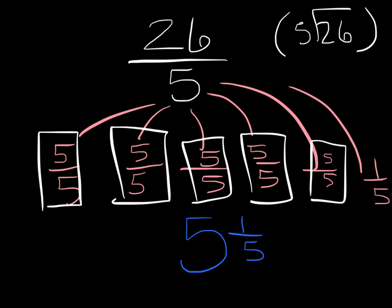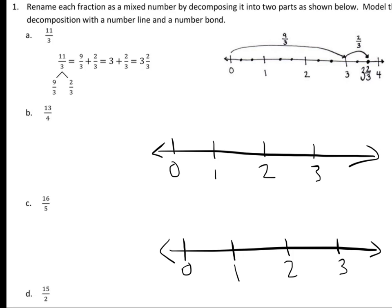We're going to work on this, but I want you to skip the middle decomposition step. On your work, you'll see they decomposed 11 divided by 3 — or 11 thirds — into 9 thirds (that's 3 thirds, 3 thirds, and 3 thirds) and 2 more thirds, totaling 11. I want you to skip that step and go right to the division part.